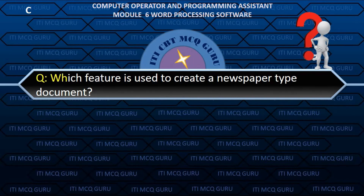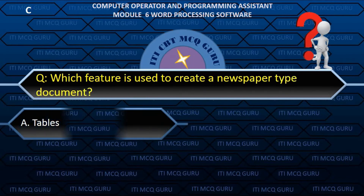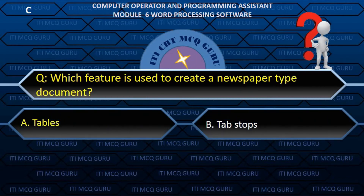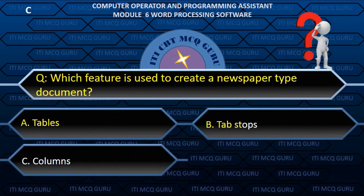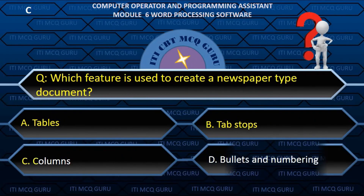Which feature is used to create a newspaper-type document? C. Columns.